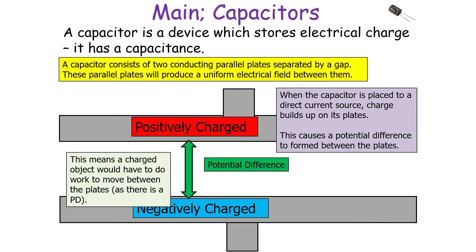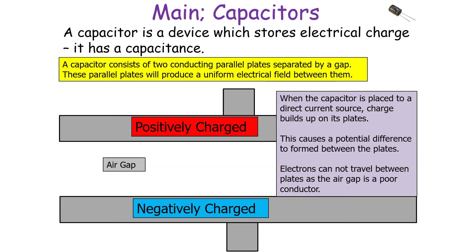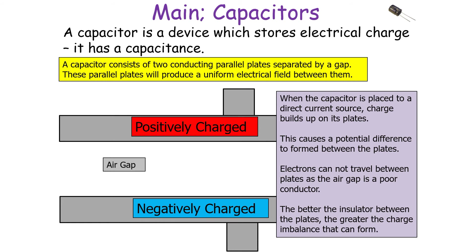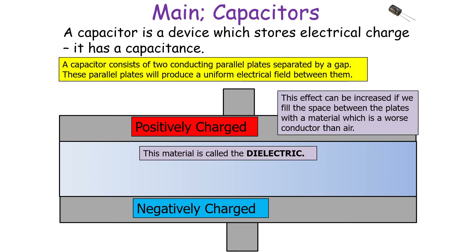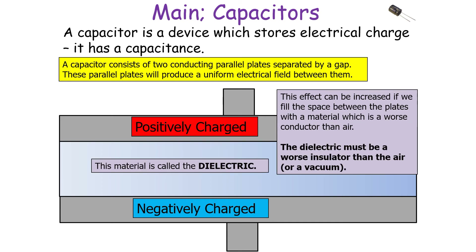A potential difference forms across the plates, meaning a charged object would have to do work to move between them. Electrons cannot travel across the gap because the air gap is a poor conductor, which allows the potential difference to form. The better the insulator between the plates, the greater the charge imbalance that can form. This effect can be increased by filling the space between the plates with a material that is a worse conductor than air — these materials are called dielectrics. The dielectric must be a worse conductor than air or a vacuum.